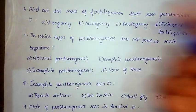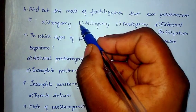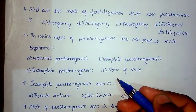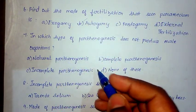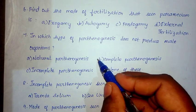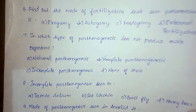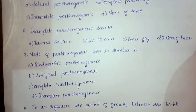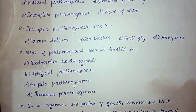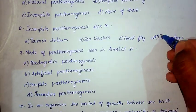For the sixth question, the correct answer is option B, autogamy. For the seventh question, the correct answer is option B, complete parthenogenesis. For the eighth question, the correct answer is option B, IDBs.